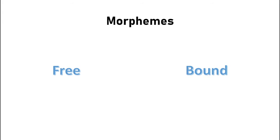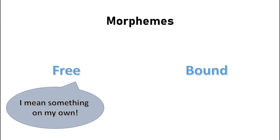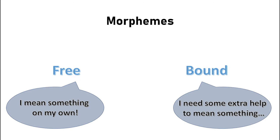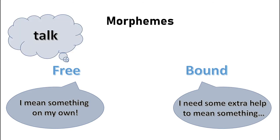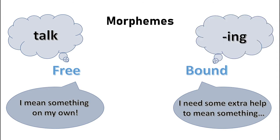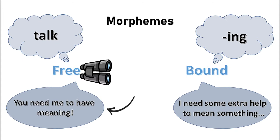We have two kinds of morphemes: free and bound. Free morphemes have their own semantic meaning, and bound morphemes do not. Just remember that if you see a morpheme on its own, it's free, and if you only ever see it attached to something else, it's bound. Think of bound morphemes as always needing adult supervision — they can't go out without their parents, i.e., the free morphemes.